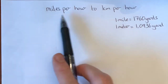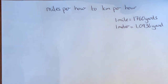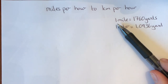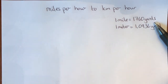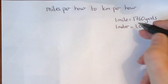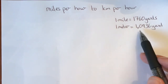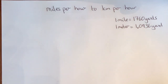If we're going to convert miles per hour to kilometers per hour using this method with first principles, we would need to know what the conversion was. Most of you know that one mile is the same as 1760 yards. We also need to know that one meter is the same as 1.0936 yards, and then we can pretty much convert any miles per hour unit to anything else.